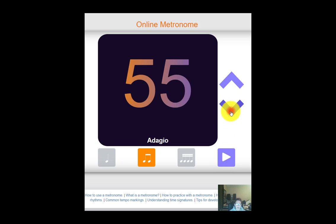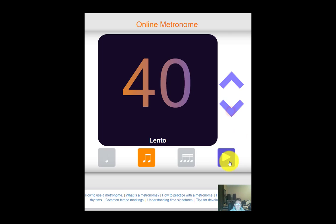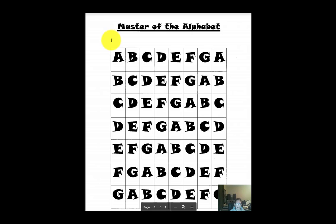You can start off going slower if you need to. Down, up, down, up, master of the alphabet. A, B, C, D, E, F, G, A, G, F, E, D, C, D, A.